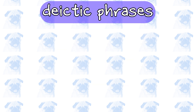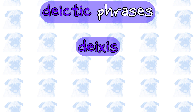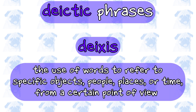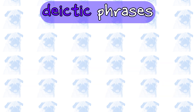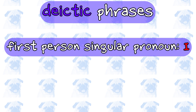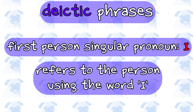The adjective deictic derives from the noun deicis, which denotes the use of words to refer to a specific object, person, place, or time, relative to a certain perspective. In English, for example, the personal pronoun 'I' is a deictic expression that refers to the person who is using the word 'I'.